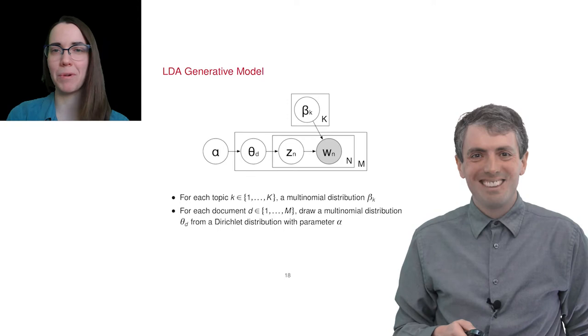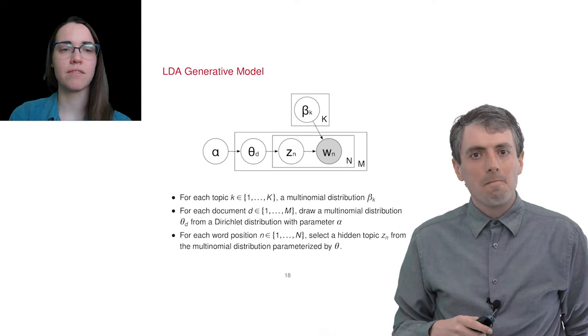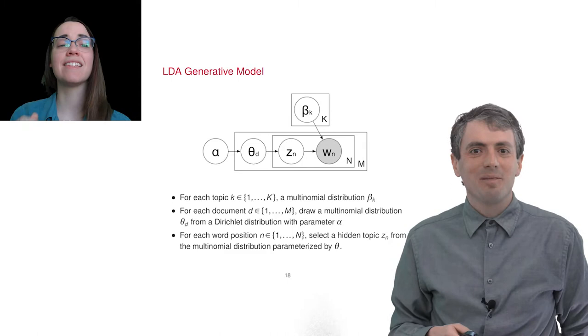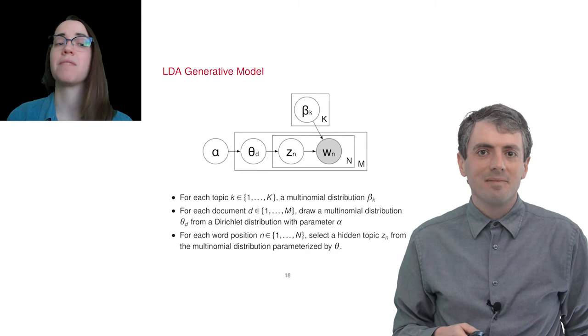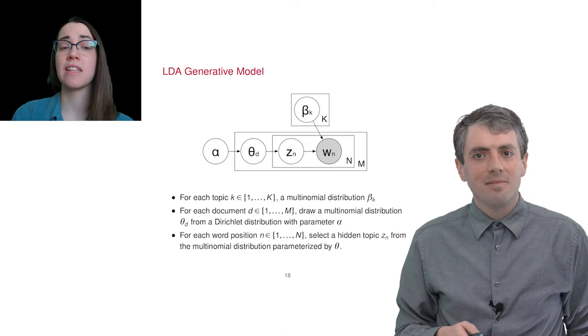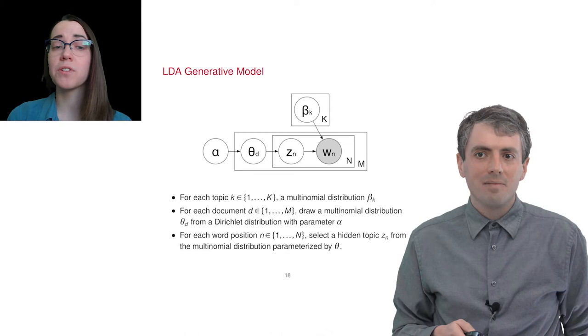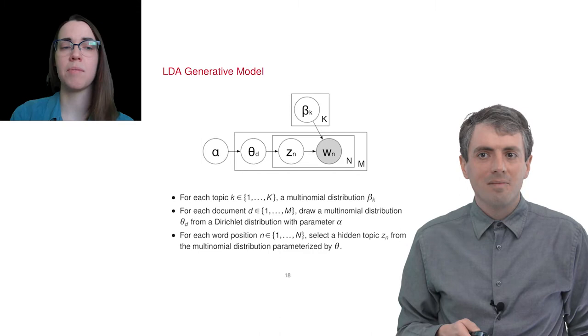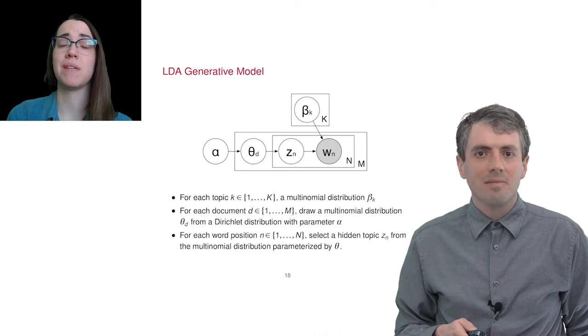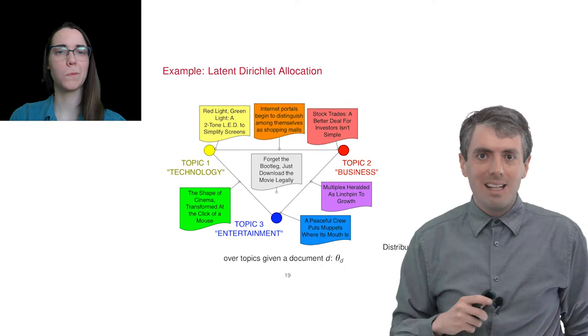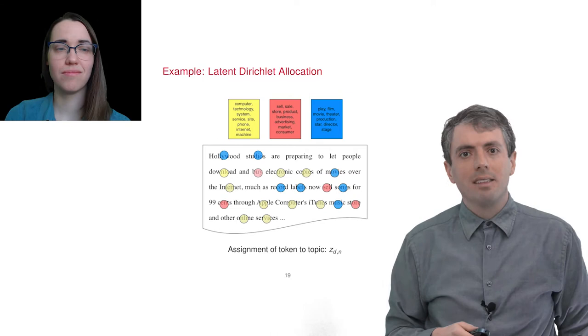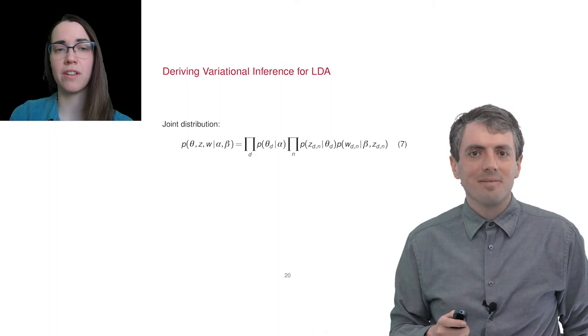Drawing a word from a topic is another categorical or multinomial distribution, but this time indexing is a little more complicated. We have k different multinomial distributions beta, one for each topic, but right now we're interested in just the topic word multinomial distribution from the topic assignment z sub d comma n for document index d and token index within document n. Then the element of that vector is indexed by the observed token associated with index d comma n, which is word w sub d comma n.